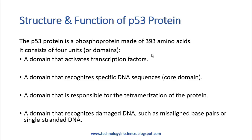What is the structure and function of P53 protein? The P53 protein is a phosphoprotein made of 393 amino acids. It consists of four domains: one domain that activates transcription factors, another domain that recognizes specific DNA sequences — called the core domain — another domain responsible for tetramerization of the protein, and a fourth domain that recognizes damaged DNA such as misaligned base pairs or single-stranded DNA.